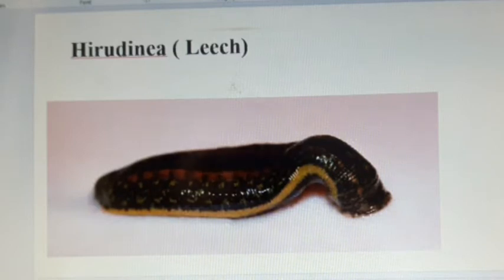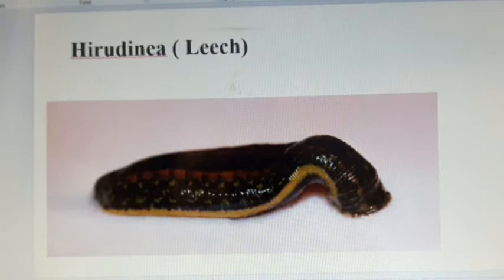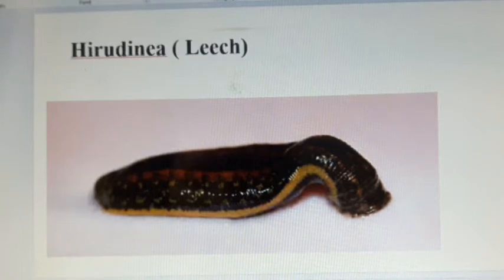As we have discussed Hirudinea in classification of phylum Annelida, it is the third, last but not the least class of phylum Annelida. Class Hirudinea contains approximately 500 species of leeches. Most leeches are freshwater, others are marine or completely terrestrial. Leeches prey on small invertebrates or feed on the body fluids of vertebrates. Their mode of nutrition is just like parasites or predators.